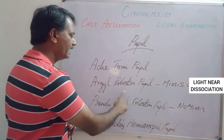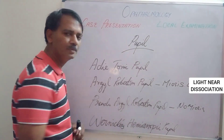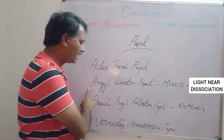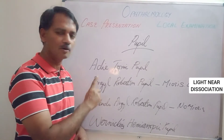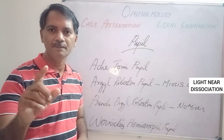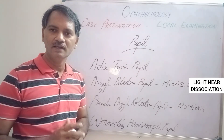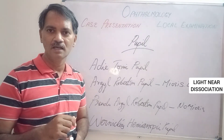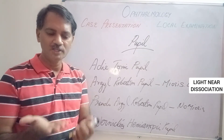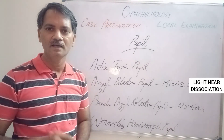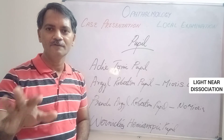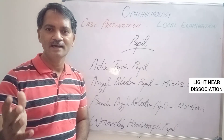The next problem is the Argyll Robertson pupil and pseudo-Argyll Robertson pupil, usually present in syphilitic infections. In the Argyll Robertson pupil the pupil will be small (miotic), while in the pseudo-Argyll Robertson pupil the pupil will be mydriatic. In both conditions, when you throw light on the eye the pupil will not constrict — the light reflex is absent — but when a person tries to read or look at something near, the near reflex is present. This is called light-near dissociation.